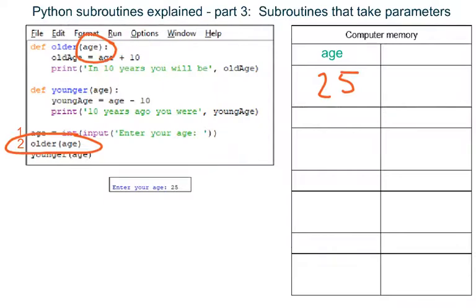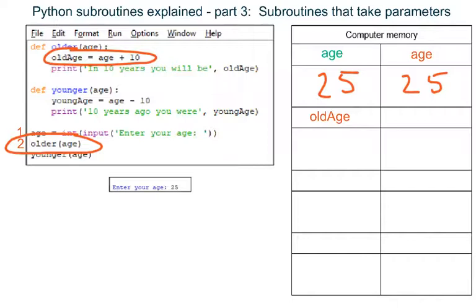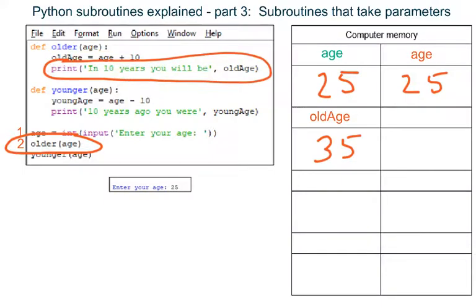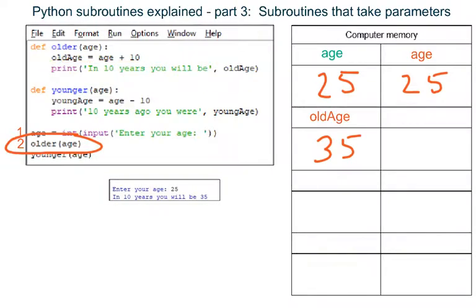Python creates a local variable named age to store this data in. A local variable named old_age is created, and the result of adding 10 to whatever is stored in local variable age is stored in this new local variable. The data in local variable old_age is printed on the screen. The subroutine has finished running, so Python destroys the local variables age and old_age and goes back to the place in the program where the subroutine was called.